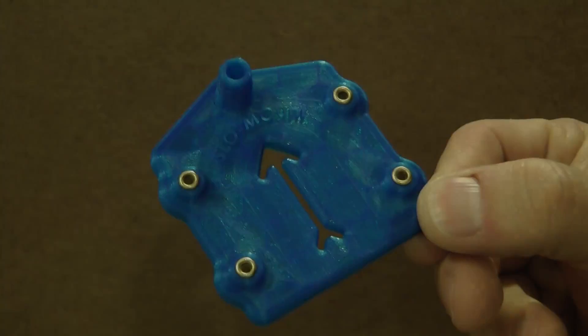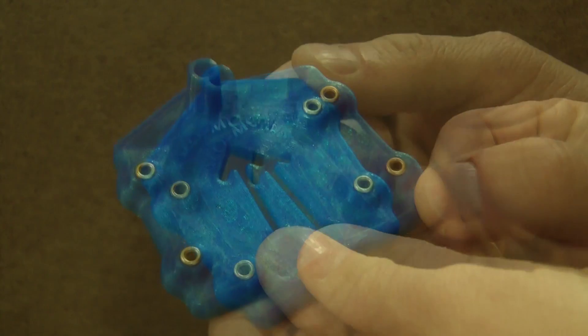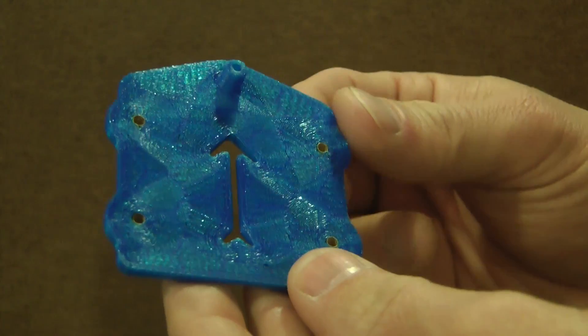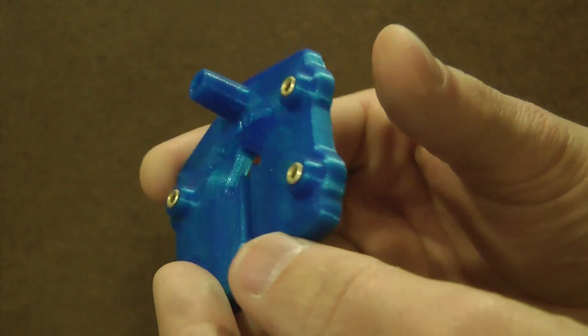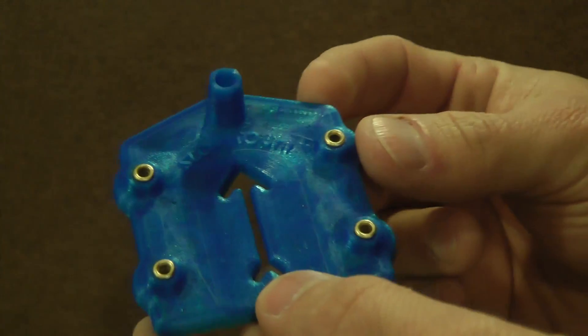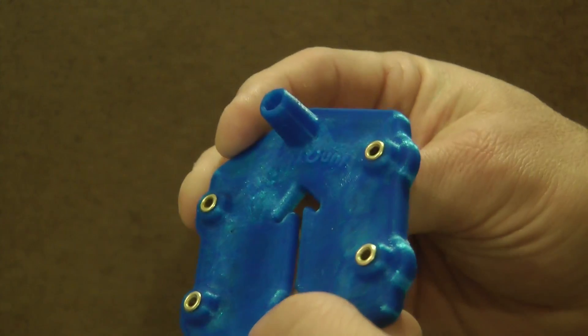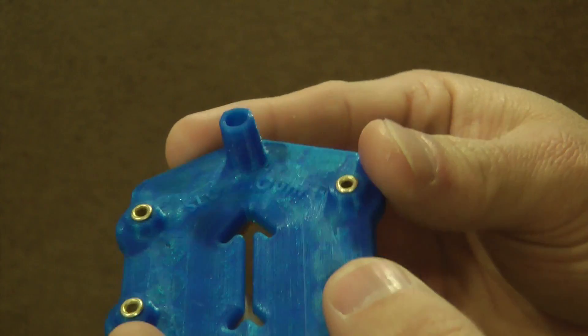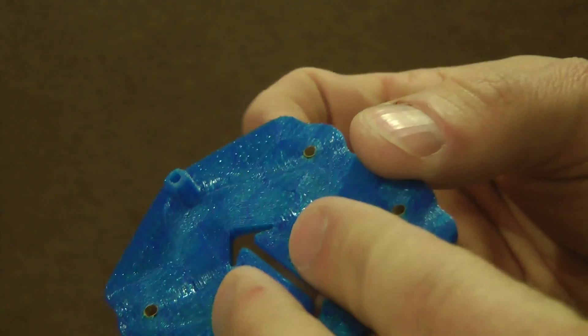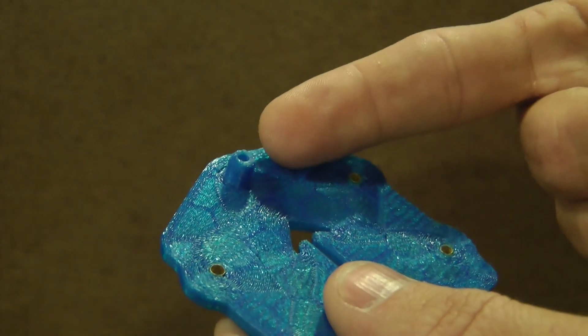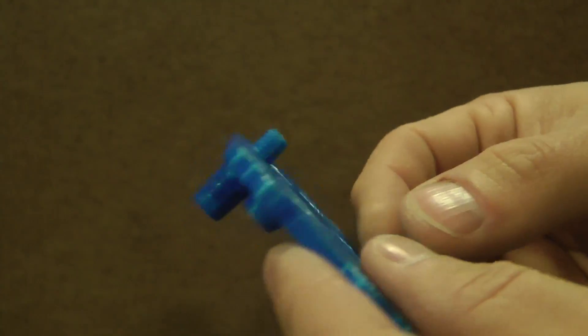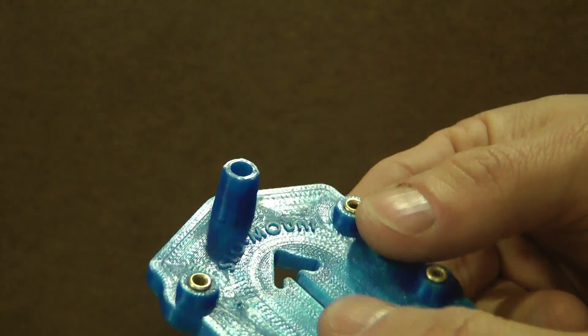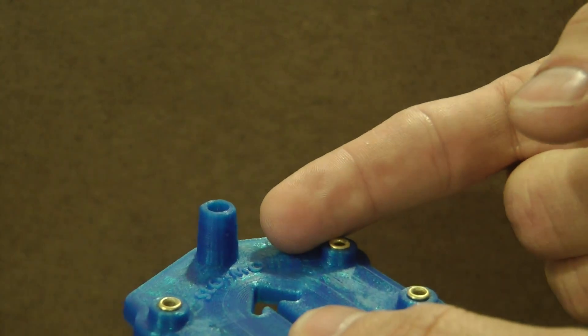So allow me to introduce you to our slow mount bracket. This is our bracket that we are now using to mount all of our slow motion switch machines. It has the ability to be kind of ambidextrous and it can be mounted on the layout two different ways. It's got the original quarter inch post for the quarter inch hole. Or if you decide to drill a bigger hole under your turnout, like a 3/8 inch hole, you can use this post.